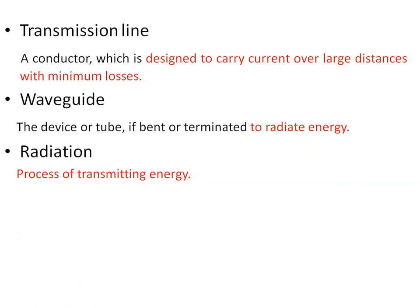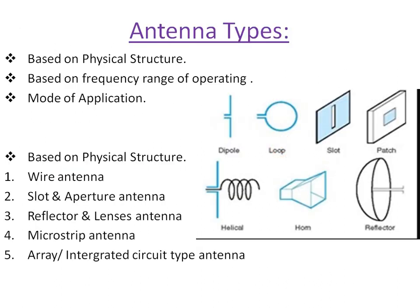The transmission line is a conductor designed to carry current over a large distance with minimum loss — minimizing loss is the ultimate goal of any communication system. A waveguide is a device or a tube; if it is bent or terminated it helps to radiate the energy. Radiation is nothing but the process of transmitting energy. These are the simple terminologies.